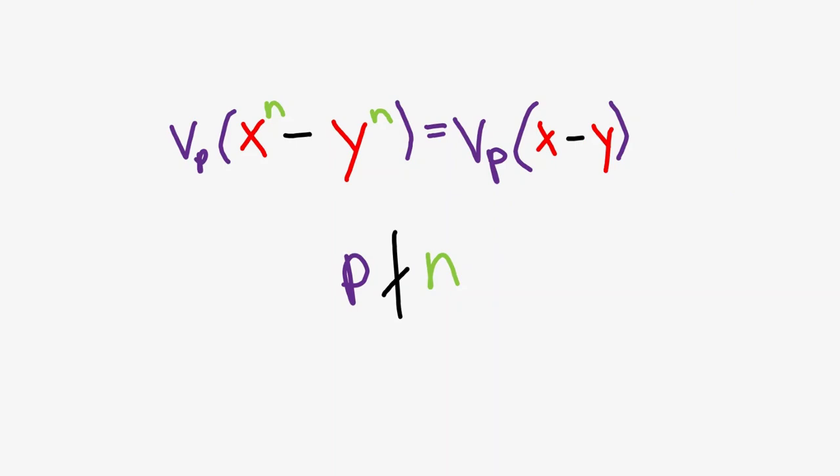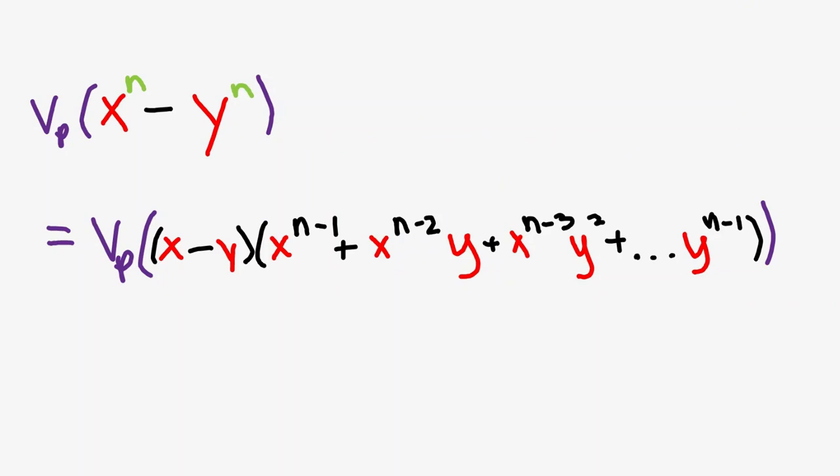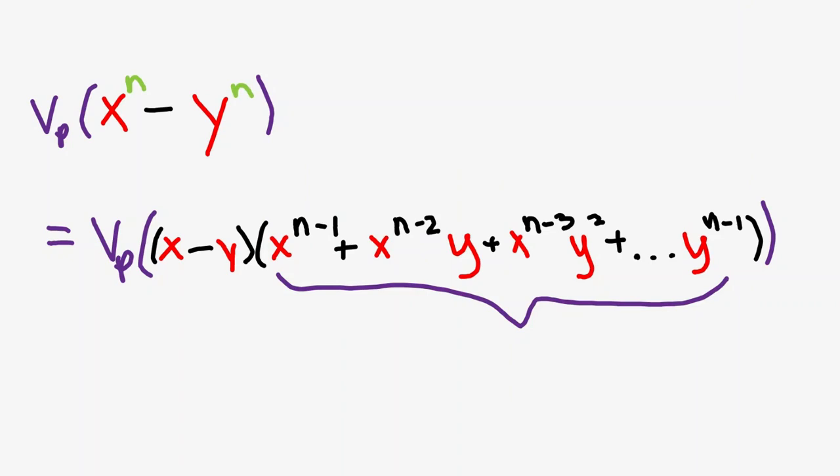As x to the n minus y to the n is a difference of powers, we can factor out x minus y like so. Now, it just suffices to prove that this has no factors of p. Recall that one of our conditions is that x minus y is divisible by p. This means that x is equivalent to y mod p, which means that we can substitute x in for y when we take this expression mod p.